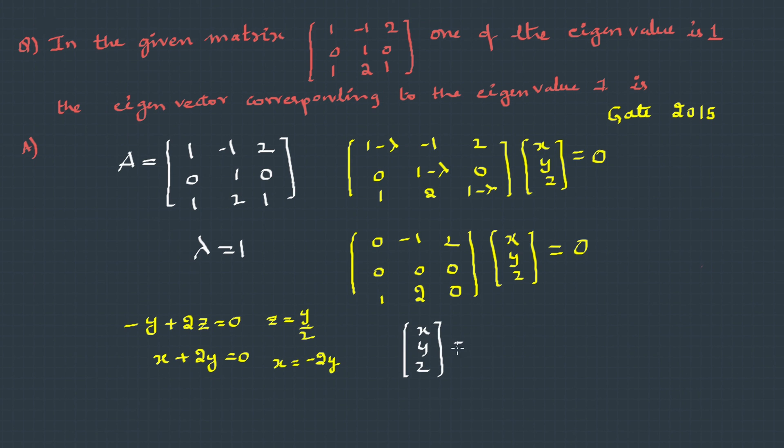The solution x,y,z is, if I take y as t, x is -2t from here, and z will be t/2. So if I take the t common, it is -2, 1, and 1/2. This is the eigenvector corresponding to eigenvalue 1.